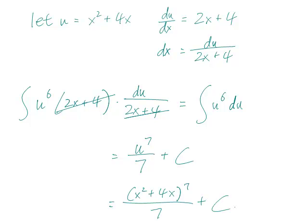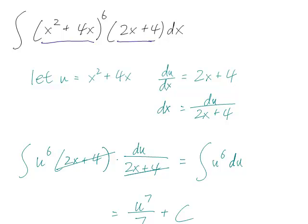Once again, if you want to check your answer, take the derivative of your answer and you'll get the original integrand, which is this x squared plus 4x to the 6 times 2x plus 4 back.